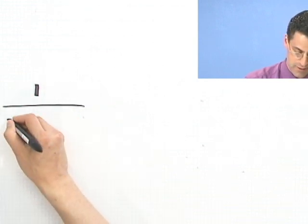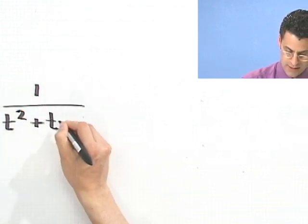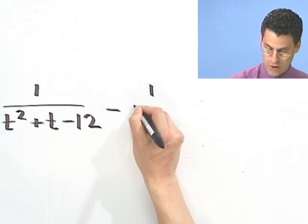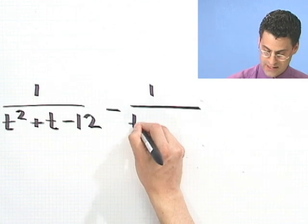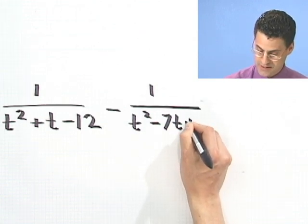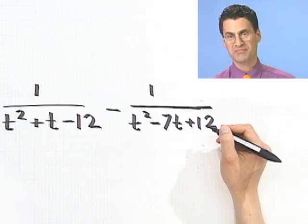1 over t squared plus t minus 12 minus 1 over t squared minus 7t plus 12. You think that's enough? Nah.